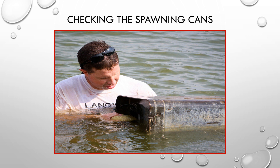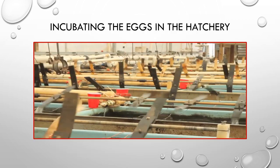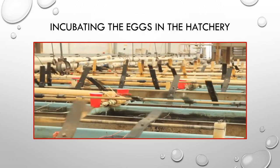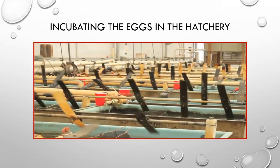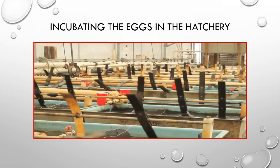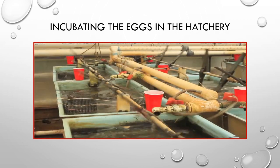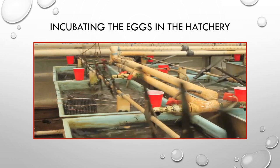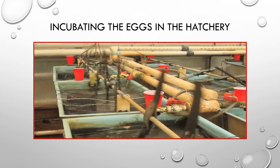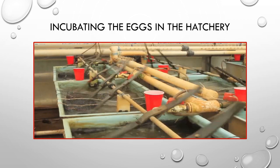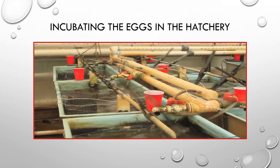If eggs are present, the farmer will gently remove them and transport them in water to the hatchery. In the hatchery the eggs are placed in baskets in a trough with slowly rotating paddles. These paddles mimic the movement of the male catfish's tail sweeping over the eggs, keeping them clean and providing them with plenty of fresh oxygen.